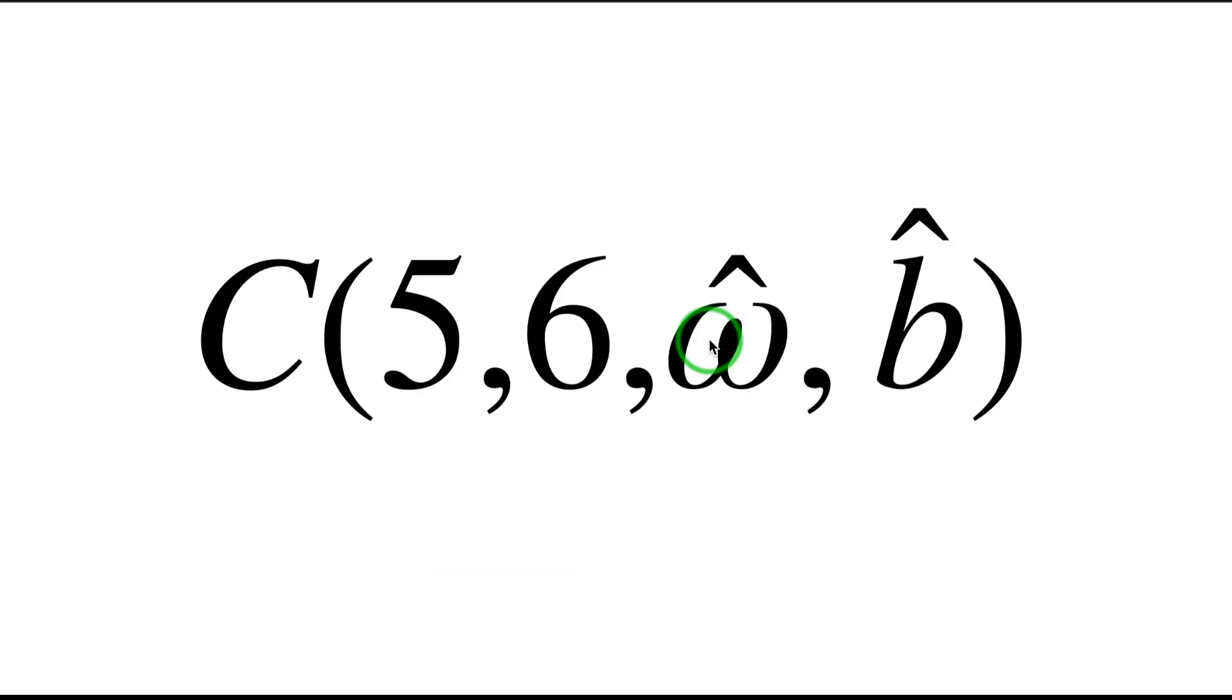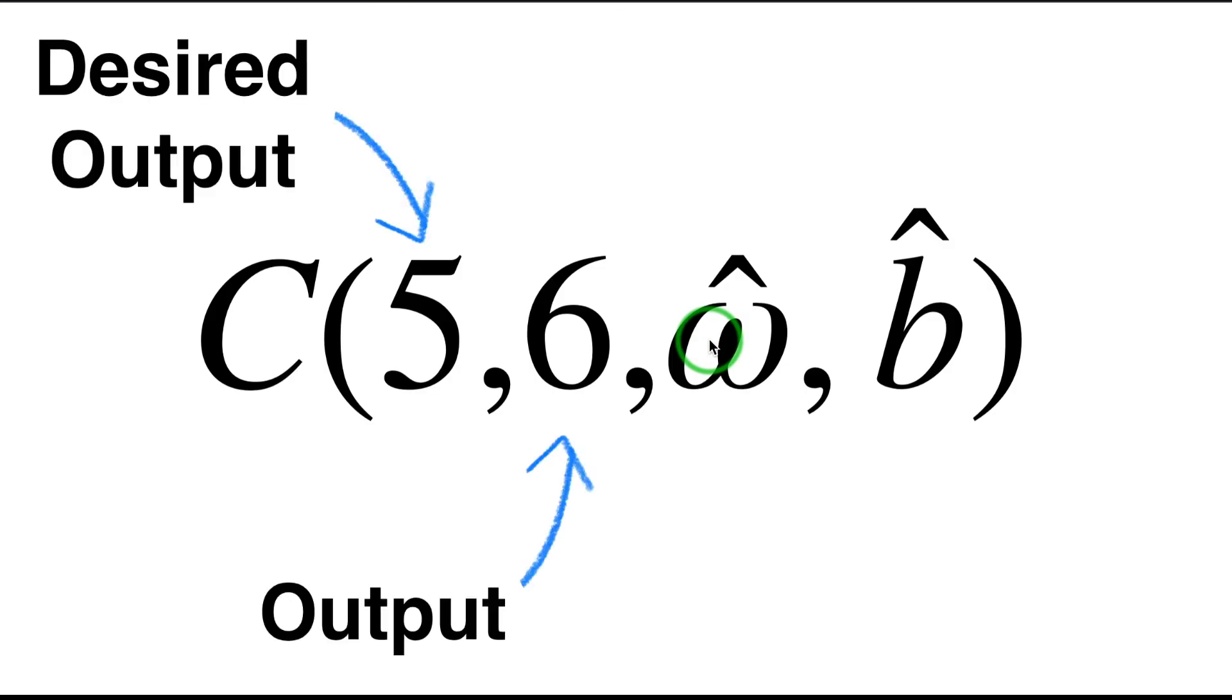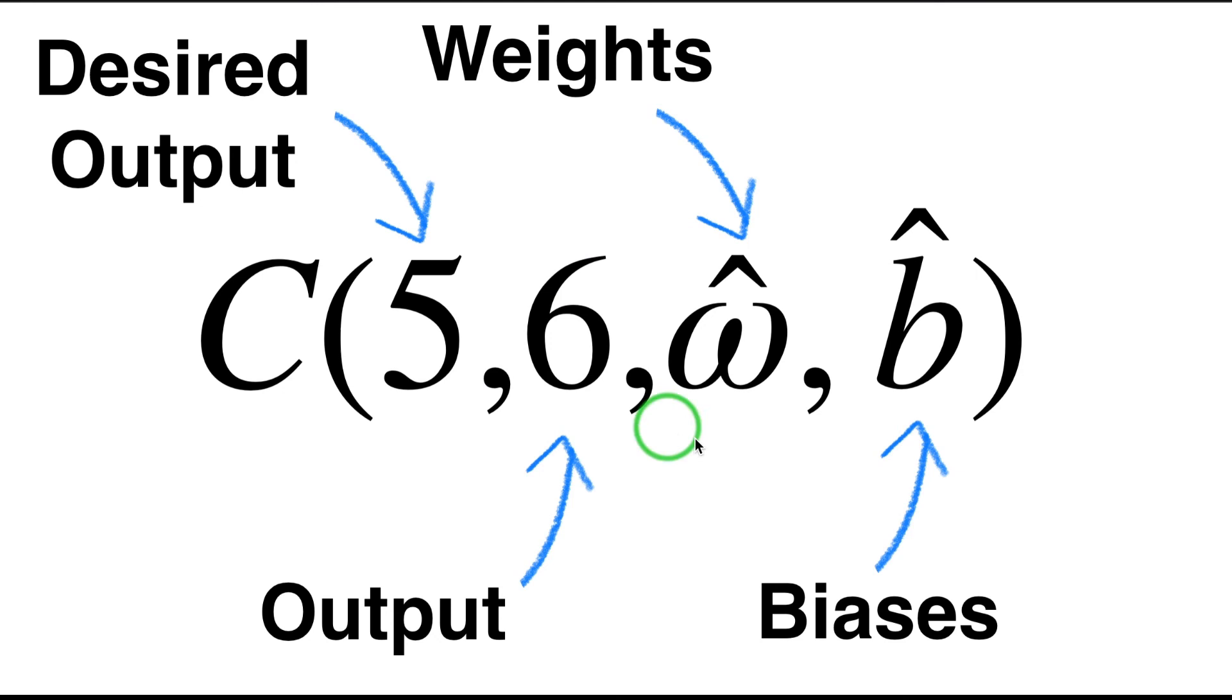So what we can do is we can have the desired output here, we can specify the output given by the network—in this case, it's a six, so already here the network is making a mistake—and then we take the weights and the biases and we put them into a cost function. So all those four parameters are included into what we call a cost function.